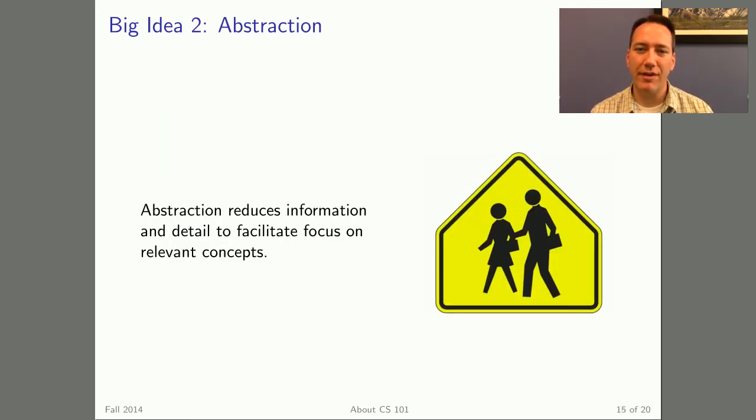Abstraction is another idea that we'll revisit again and again, and we've talked a little bit about it in this video already. The basic concept is to reduce information, to focus on the relevant details. For example, in a school crossing sign, notice how the people don't have hair or hands or feet. I've always found that a little bit funny.